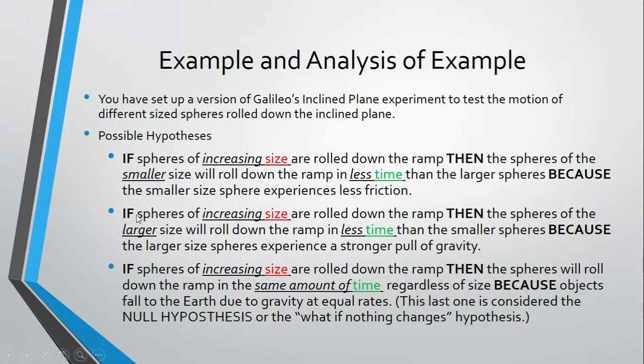Let's take a look at this again. So that's just one potential prediction. Let's take another one. If spheres of increasing size are rolled down the ramp, then the spheres of the larger size will roll down the ramp in less time, so it means they'll go faster than the smaller spheres, because the large spheres experience a stronger pull of gravity.